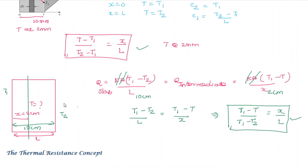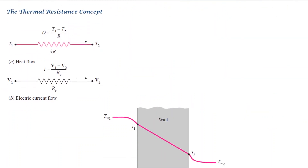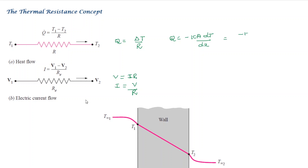Next, we introduce the thermal resistance concept. Analogous to electrical current flow where V equals I·R, we write heat flow as Q equals delta T divided by resistance. From Fourier's law, Q equals minus k·A·dT/dx. Rearranging, the conduction resistance is R_conduction equals L/(k·A). This is the thermal resistance concept.